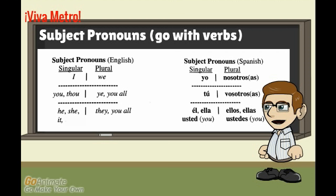Spanish is similar. The 'I' corresponds to 'yo.' The 'you' or 'thou' corresponds to 'tú,' which is the informal you form — used with family members, friends, or people of your own age or younger. You then have 'él' (he), 'ella' (she), and 'usted,' which is the formal you — used for people you don't know or people who are older than you. It's a way to show respect.